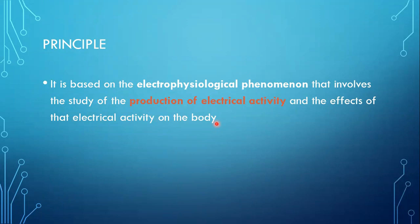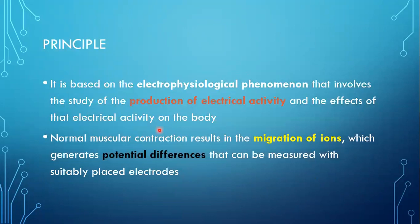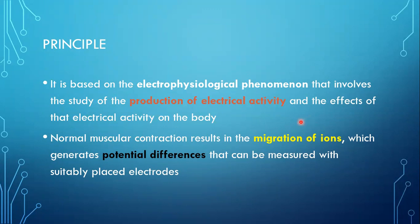A normal muscular contraction results in the migration of ions, which generates a potential difference that can be measured with suitably placed electrodes. When the muscle is contracting and I place surface electrodes over that area, I am able to pick up a potential difference signal because of the migration of ions.